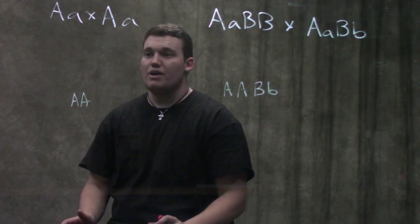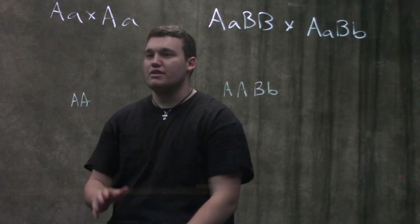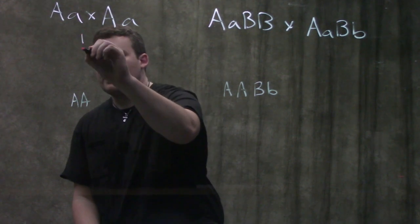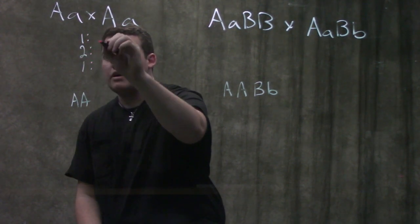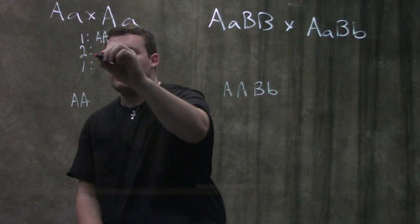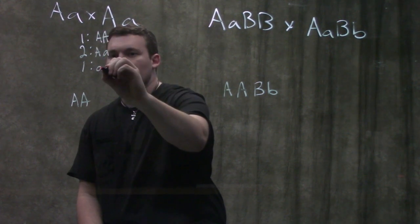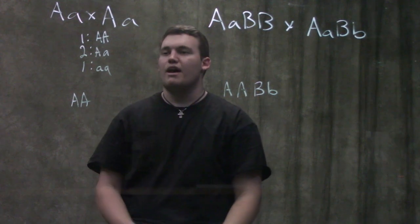I don't want you guys to have to do any Punnett squares for this. You guys should be able to look at this and say, this is two heterozygotes, one to two to one ratio. This one's big A big A. This one's big A little a. This one's little a little a. You guys should be able to knock that out really fast now.